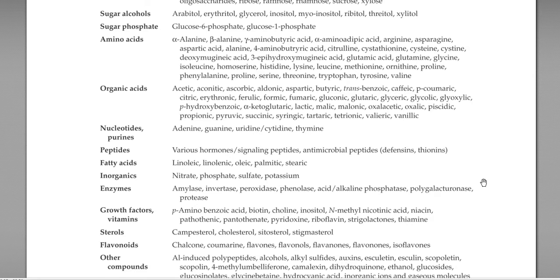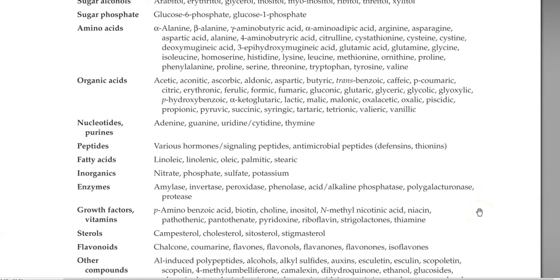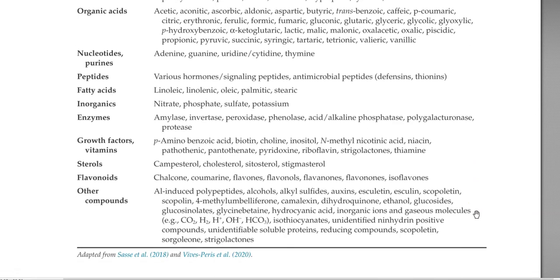Various enzymes can be present including amylase, invertase, oxidase, phenolase, and polygalacturonase. Growth factors or vitamins are also present in this region. Sterols such as cholesterol, campesterol, and stigmasterol are present in large amounts. Flavonoids, including flavonols and flavanols, are commonly involved in the rhizobium-legume interaction, attracting microorganisms closer to the root surface.